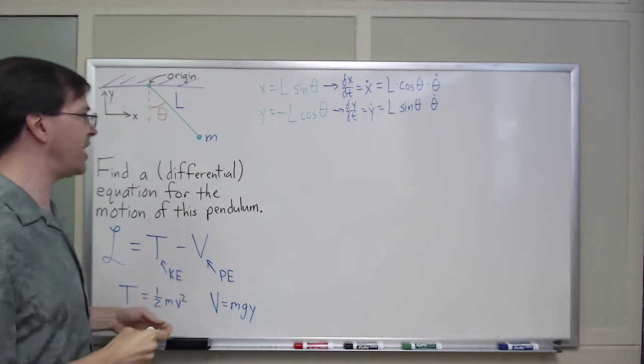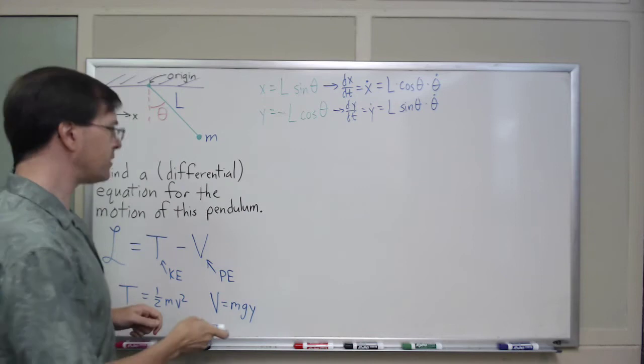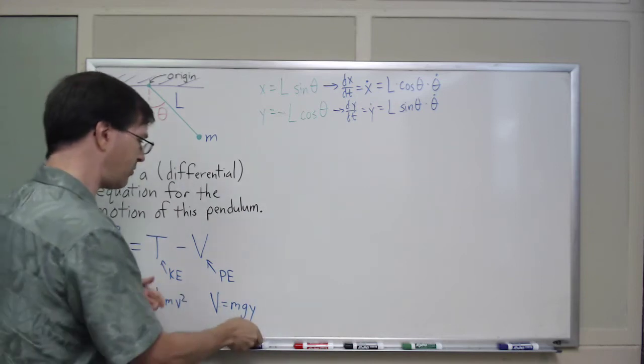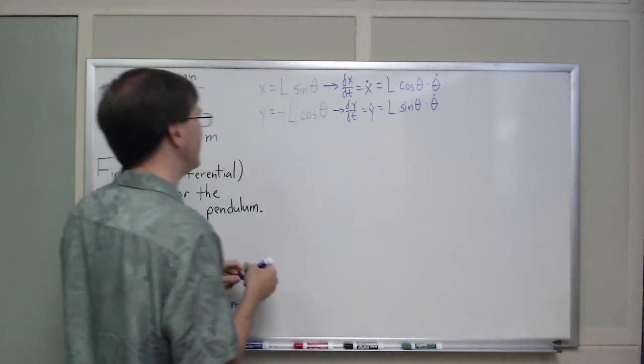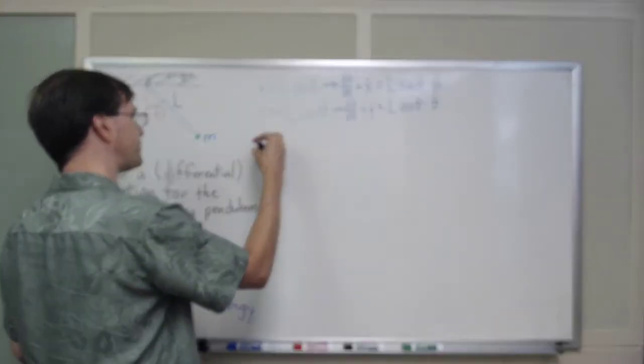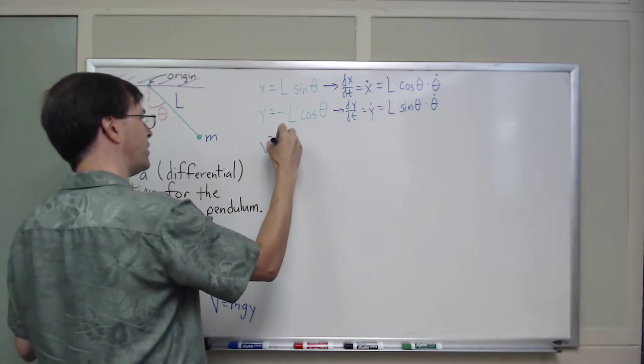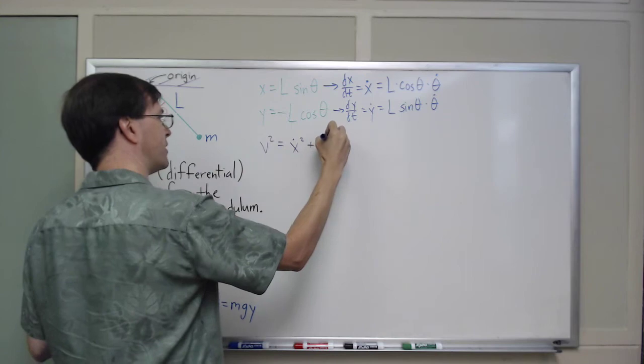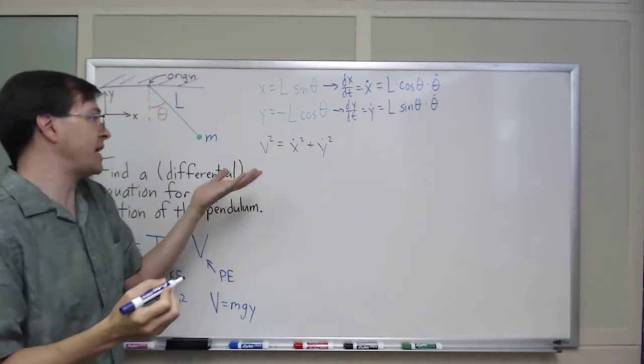So, what is my V then? V, I could have even done this a different way, couldn't I? I could have, I, well, I'll go ahead and write it down. This is fine. I'm just doing this as best I can. I want V squared. V squared is x dot squared plus y dot squared.